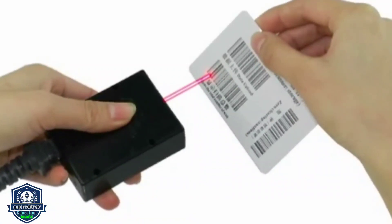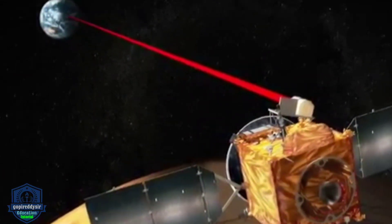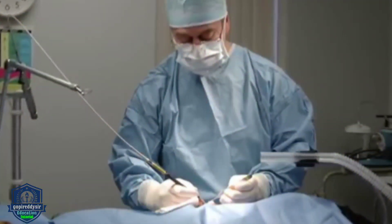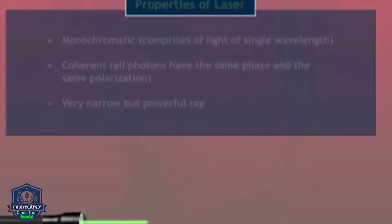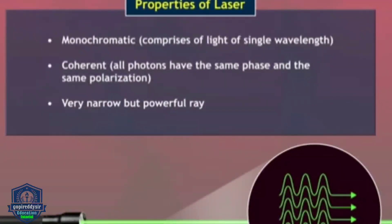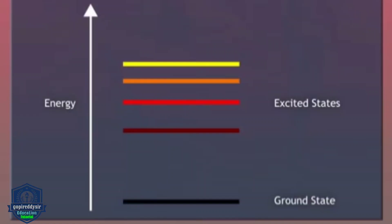The monochromatic beam of light forms a single light. Laser light has coherence — it travels in the same direction and with the same intensity. This beam can travel over a long distance without much loss of energy.